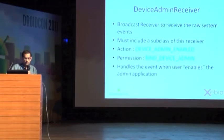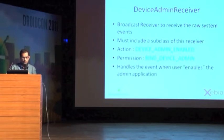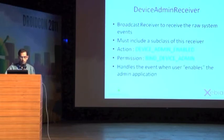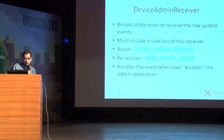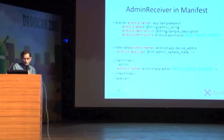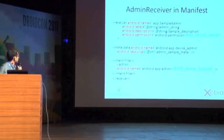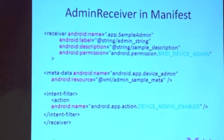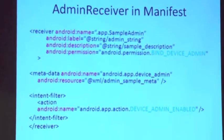The intent action is ACTION_DEVICE_ADMIN_ENABLED. The required permission is BIND_DEVICE_ADMIN. This handles the event when the user enables the admin application. In the manifest, you declare it like any broadcast receiver — with a name, a label, an optional description, and the BIND_DEVICE_ADMIN permission. There is also metadata corresponding to the DeviceAdminInfo class.